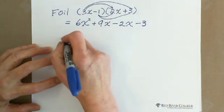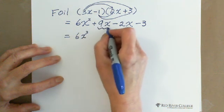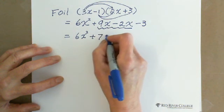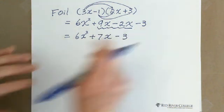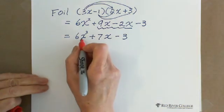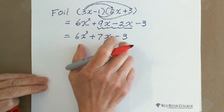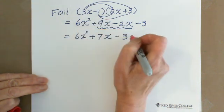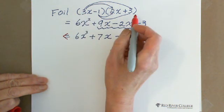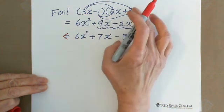Then we combine those middle terms. We have 6x squared, and combining 9x with negative 2x gives plus 7x, minus 3. When we do factoring, we are given 6x squared plus 7x minus 3, and we need to go backwards — factoring and FOIL are opposite operations.